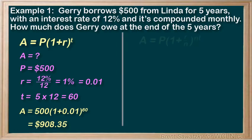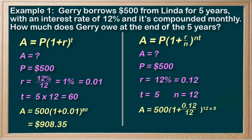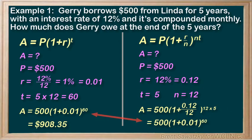If we use the other form of the equation, A equals P times (1 plus r over n) to the power of n times t, we identify the compounding period as one month. Plugging in: P equals 500, r equals 0.12 (rate per year), t equals 5 (time in years), and n equals 12 (compounding periods per year). Once we simplify the n terms, we end up with the exact same equation, giving us $908.35, rounded to the nearest cent.